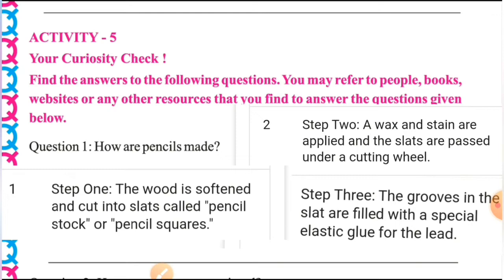Step 3: The grooves in the slats are filled with a special elastic glue for the lead. Pencil के slats के अंदर एक hole रहता है, जिसमें wax को fill करना पड़ता है। एक elastic glue से उसको lead की मात्रा में paste किया जाता है ताकि वो बाहर न निकले। जब हम pencil sharpener में sharpen करते हैं तो lead हिलता नहीं है — break नहीं होता — due to the glue। यह तीनों steps हैं pencil बनाने के।